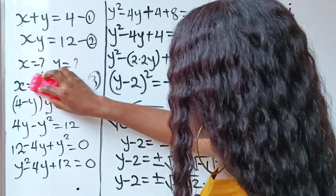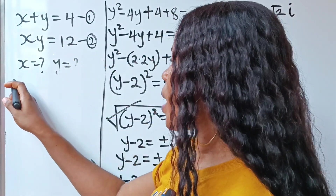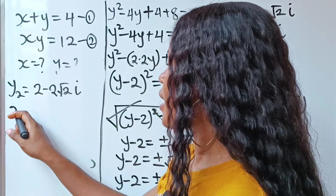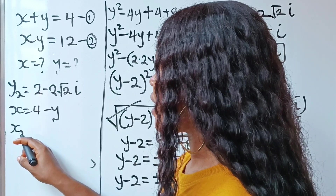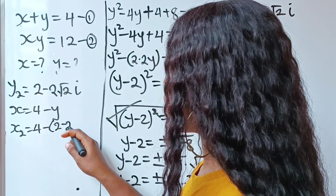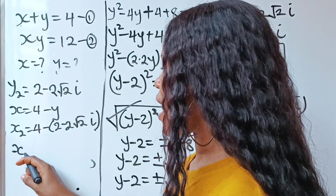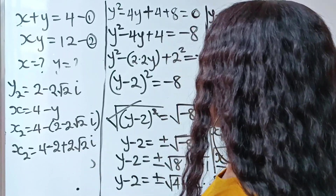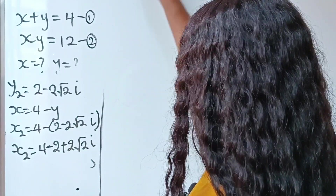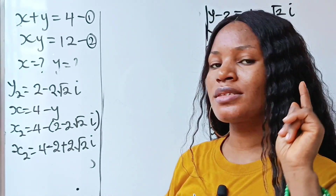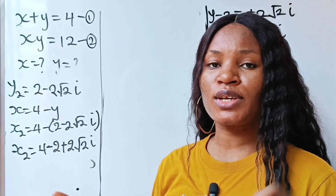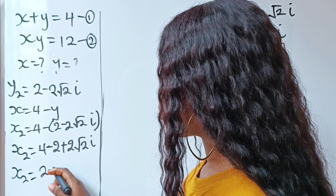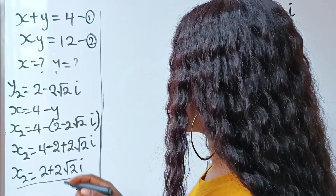Now let's get x₂. We have y₂ equals 2 minus 2√2i, and x equals 4 minus y. So x₂ equals 4 minus (2 minus 2√2i). That gives us 4 minus 2 plus 2√2i, so x₂ equals 2 plus 2√2i.